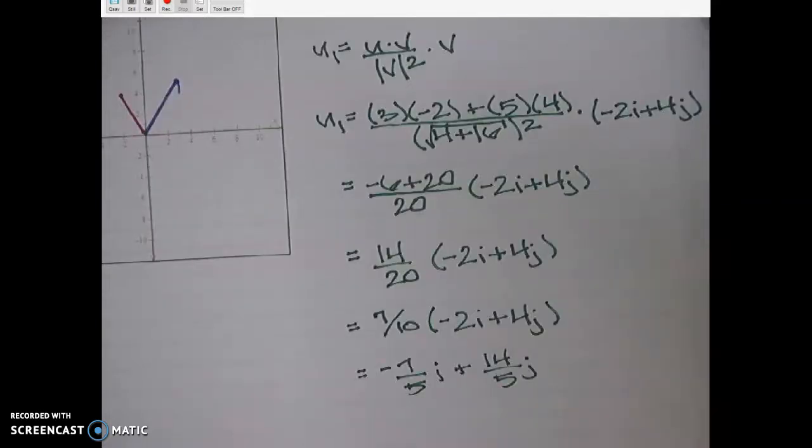So u dot v over the magnitude of v squared times v. So just the math getting there. And I end up with negative 7 fifths i plus 14 fifths j. And so again, this is u1, and this should come out as being parallel to, which is pretty much right on top of v.